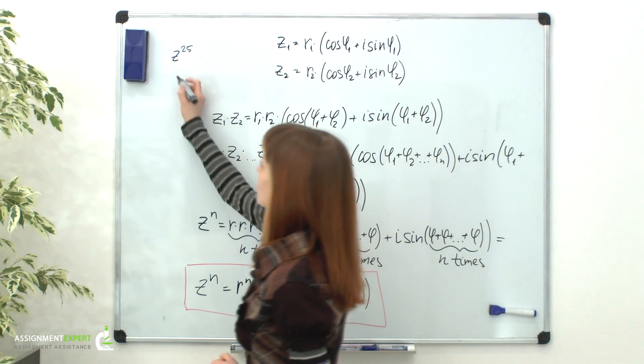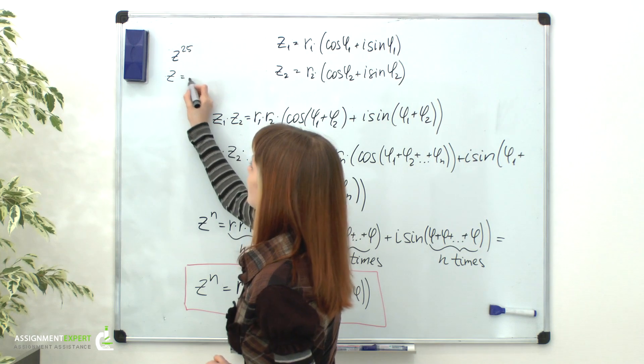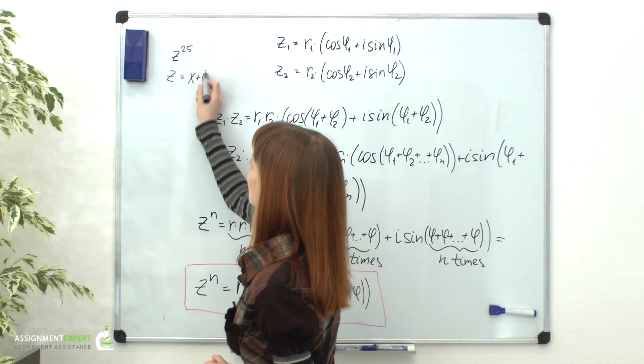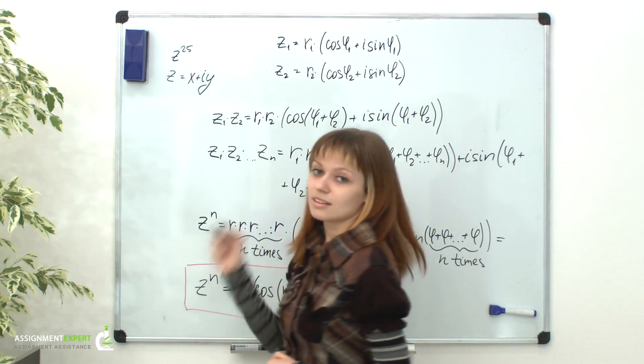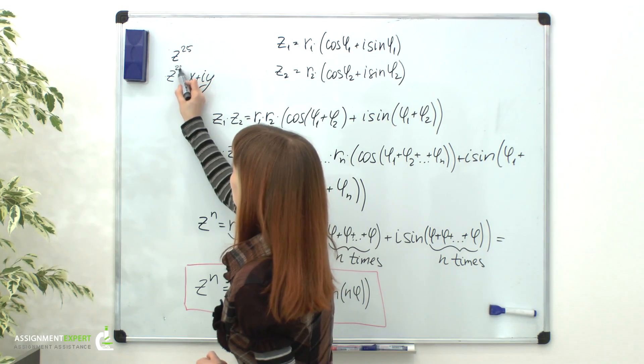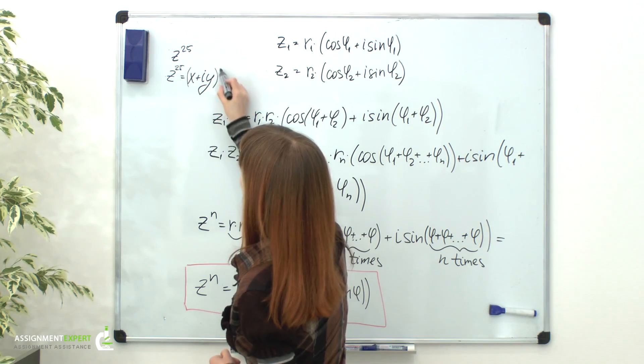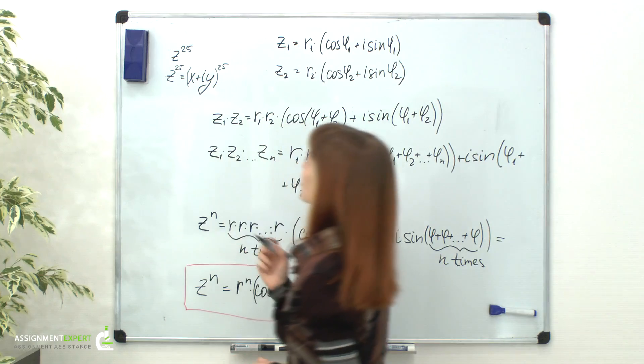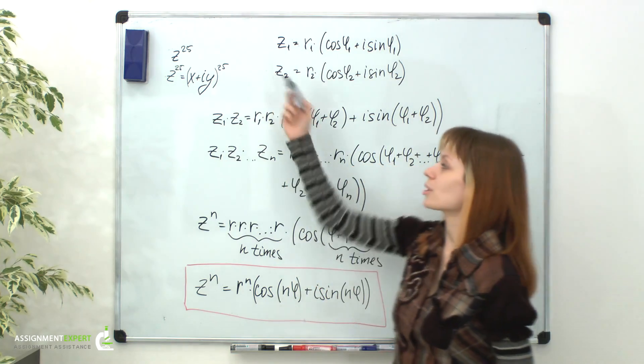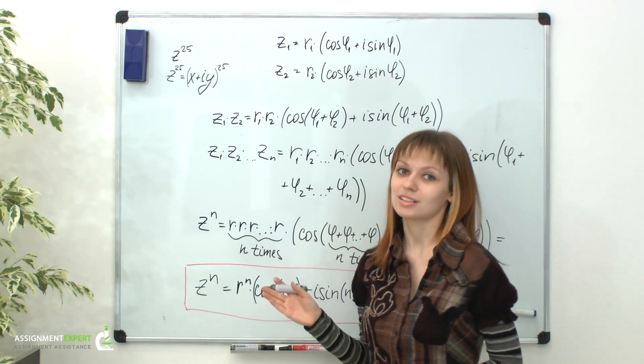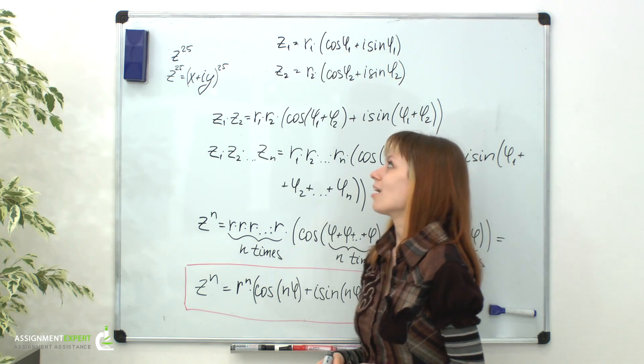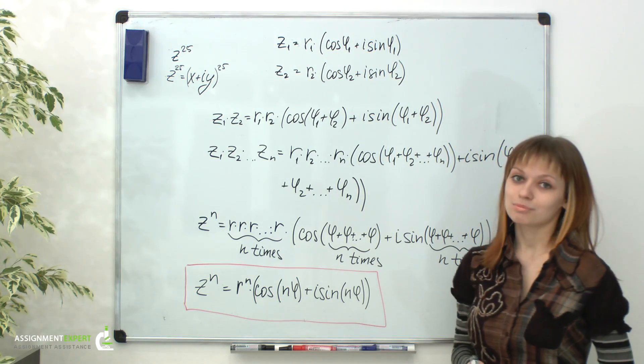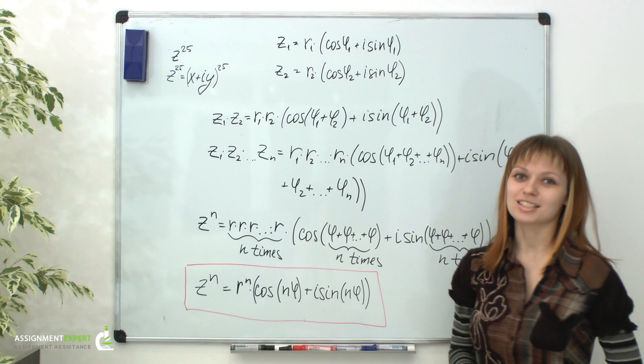But if we're dealing with an algebraic form, i.e. x plus i y, then to raise the number to 25th power, we'd have to involve binomial theorem for the power 25, which is not an easy thing to do at all and consumes lots of time, so De Moivre's formula is indeed something to enjoy.